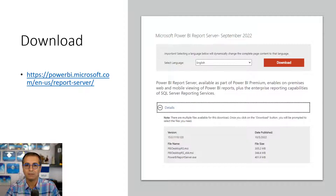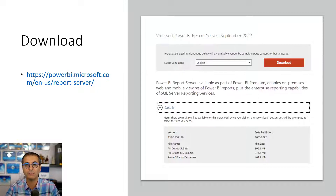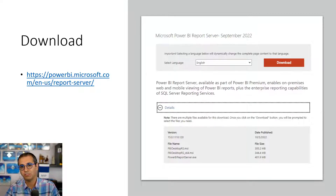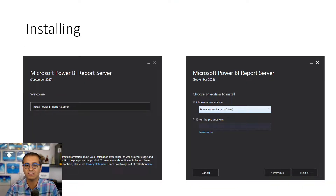To get started, you need to download it from the Power BI website, where there's a dedicated section for report server. The download includes three files: two are the Power BI Desktop edition for report server in 64-bit and 32-bit versions, and one is the Power BI report server itself. There is also a free evaluation edition that lasts 480 days, which is a good option if you want to try it out.